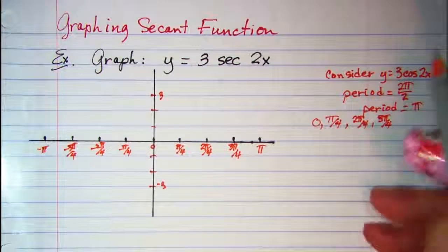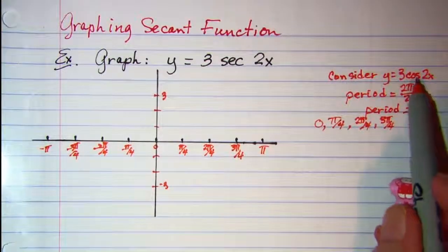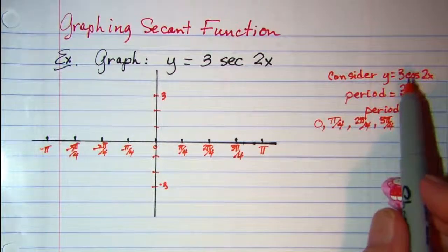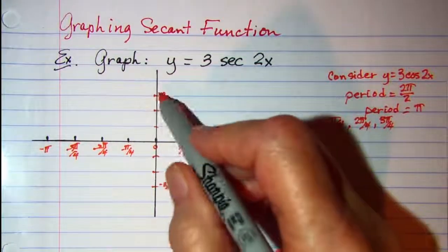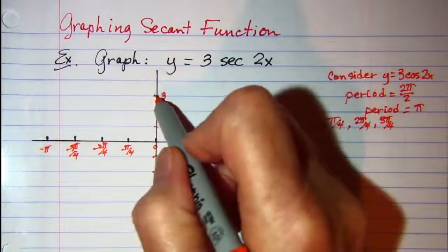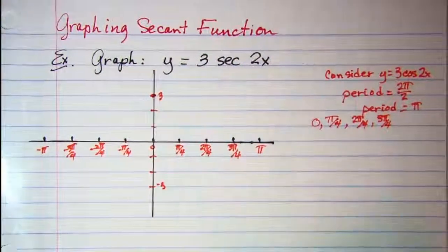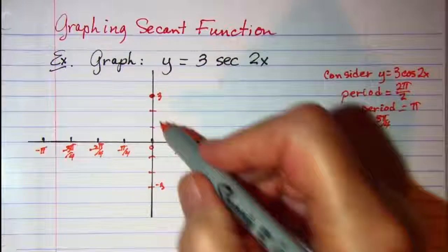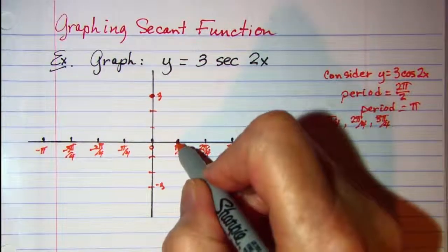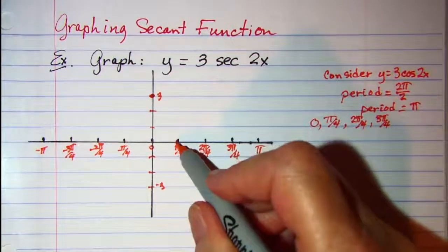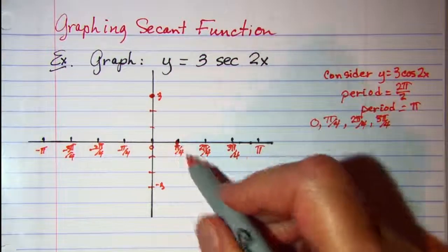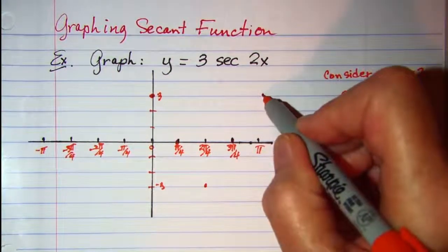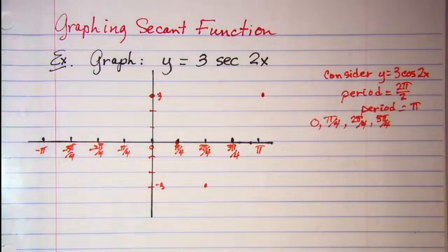So my cosine curve at x equals 0 will be at its maximum. So my point up here is on my y equals 3 cosine curve and then it hits the axis at π over 4. It's at min at π over 2.